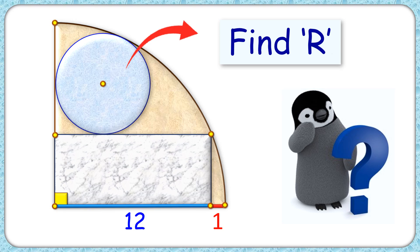In this interesting question, we have a rectangle and a circle inside a quadrant. Given is the length of the rectangle is 12 cm, the length of this red line segment is 1 cm. With this limited data, we have to find the radius of the circle.